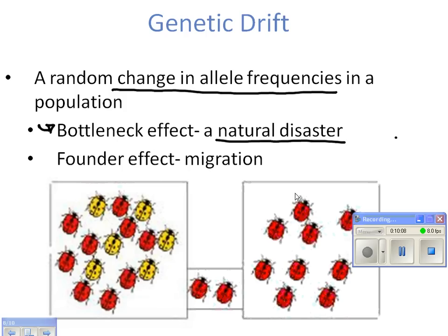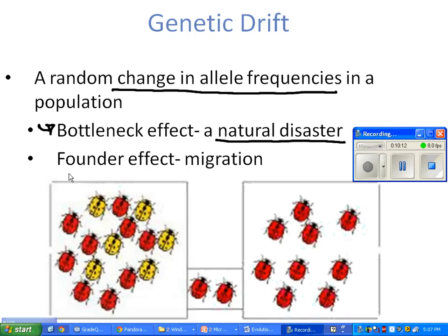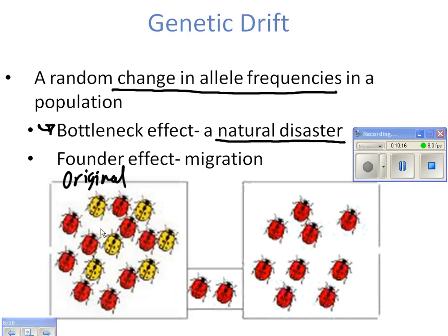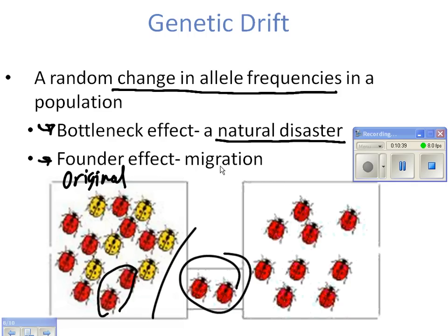Looking at this example with bugs — the original population is about 50/50 red and yellow. Imagine a natural disaster occurred, or a migration happened, and in the new population you only have two red bugs left. When those two red bugs reproduce, you get a new population of all red bugs. The population changed from 50/50 to 100% red, but it was not because of natural selection — it had nothing to do with the red-colored trait.